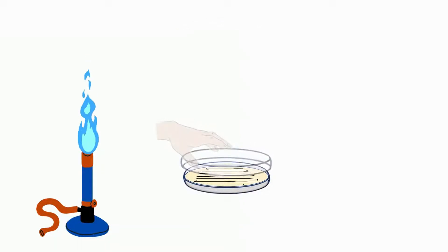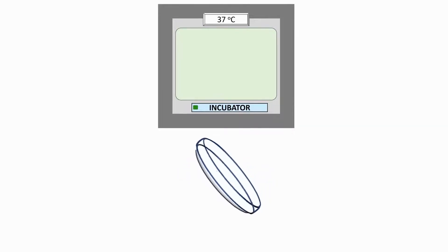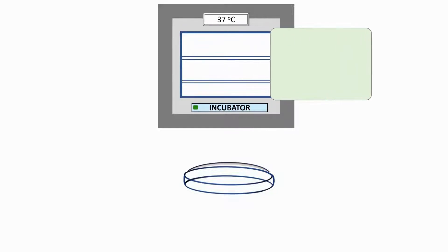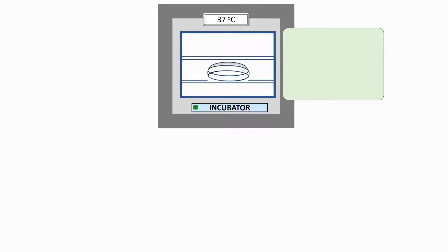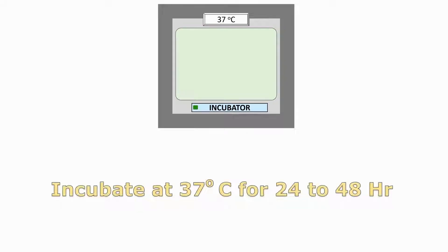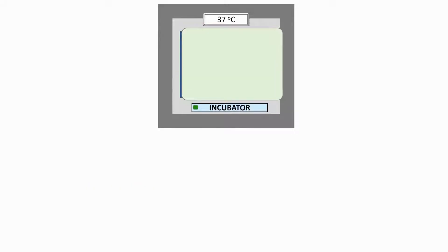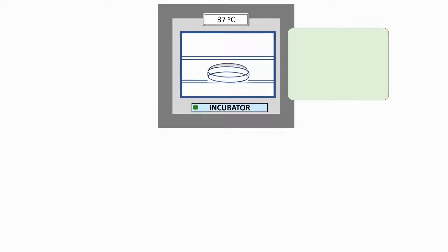Replace the lid immediately and invert the plate. Label it and keep the plate in an inverted position for incubation in the incubator. Incubate the plate at 37 degrees Celsius for 24 to 48 hours.